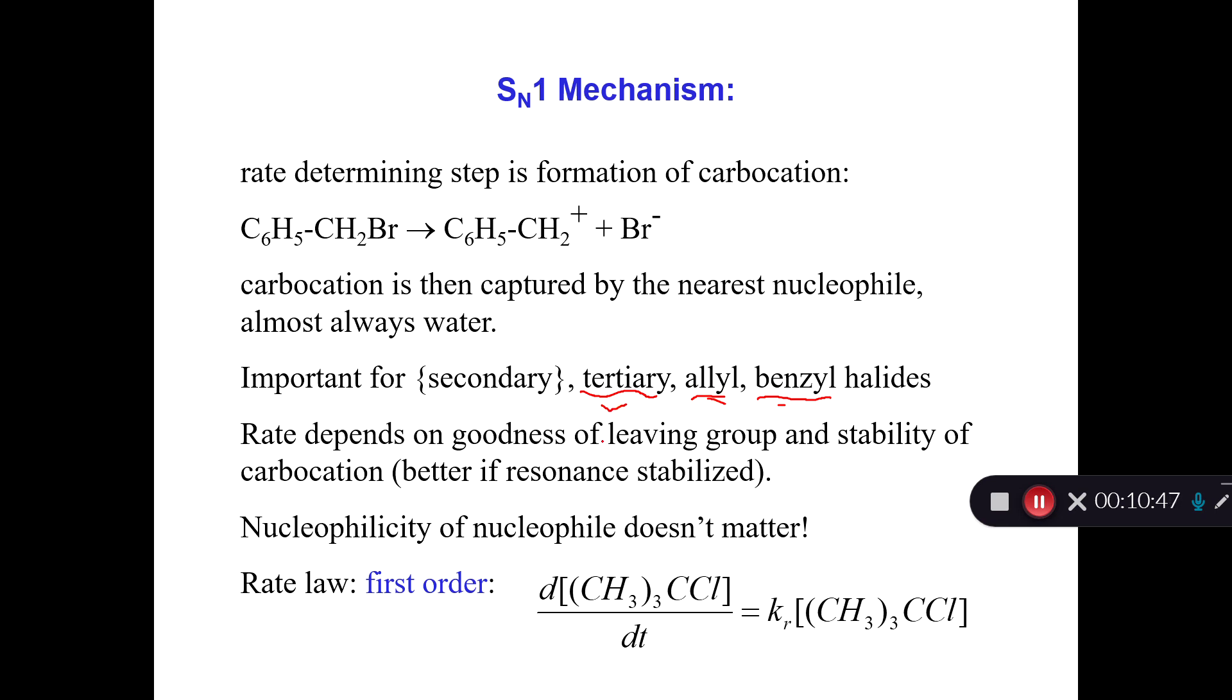So these SN1 mechanisms are most common for things that can form stable carbocations. And that would include benzyl halides, allylic halides, tertiary halides. And the rate depends on the goodness of the leaving group and the stability of the carbocation. But the nucleophilicity of the nucleophile doesn't matter in the slightest. And in fact, the nucleophile is almost always in our case going to be water. So the rate law is just the change in the concentration of the substrate over time is equal to the rate constant. This is now a true first-order rate constant multiplied by the concentration of the contaminant. And as a true first-order rate constant, this will have units of 1 over time, like 1 over seconds.